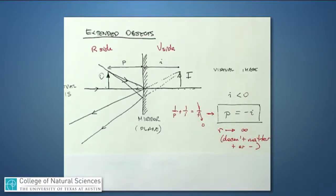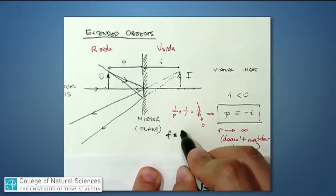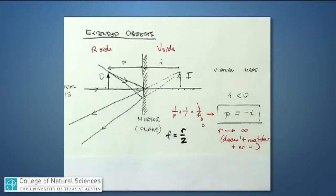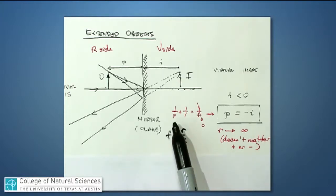The equation again is 1 over P plus 1 over I equals 1 over F. Focal length F equals R over 2, where R is the radius of curvature. For a flat mirror, the radius of curvature is infinitely large — R goes to infinity, so F goes to infinity, and 1 over F approaches 0. We'll just say it is 0, so the equation simplifies to 1 over P plus 1 over I equals 0.